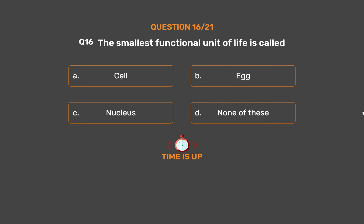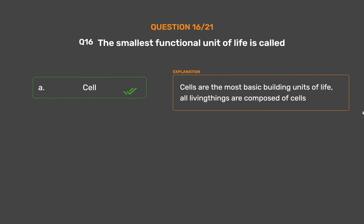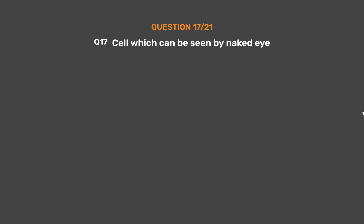The correct answer is Option A: Cell. Cells are the most basic building units of life. All living things are composed of cells.